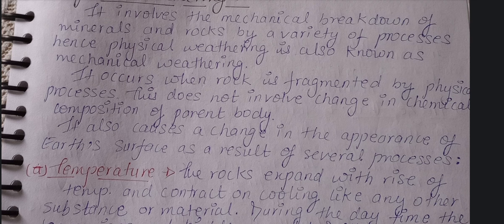Physical weathering is straightforward to understand: if there is a physical action on a rock causing it to break into smaller pieces, that is disintegration, and it falls under physical weathering. Mechanical actions include temperature changes, freeze and thaw cycles, or applying a physical force like a hammer.